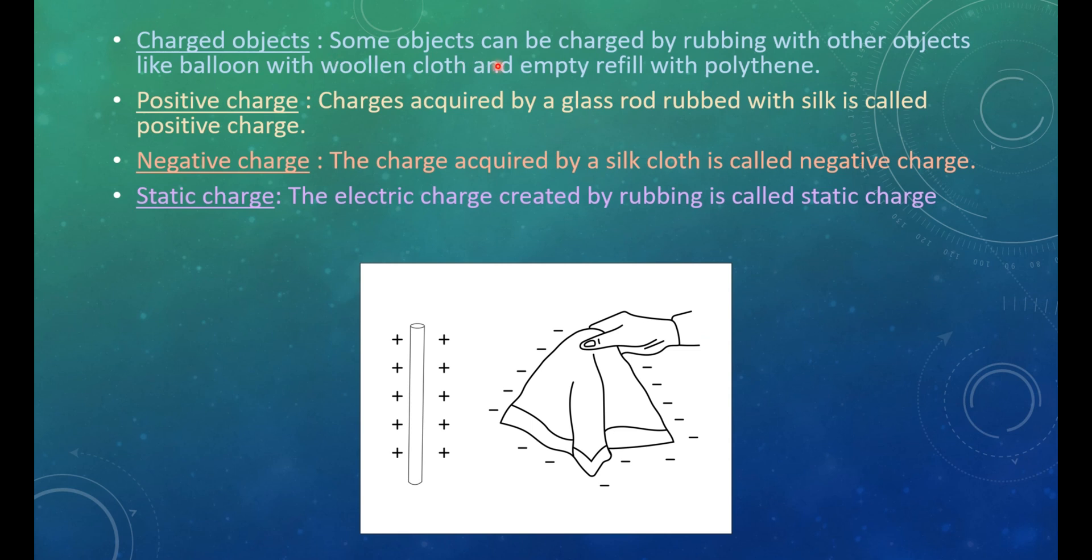Charged objects. Some objects can be charged by rubbing with other objects like balloon with woolen cloth and empty refill with polythene. Positive charge: charges acquired by a glass rod rubbed with silk is called the positive charge. Negative charge: the charge acquired by a silk cloth is called negative charge. Static charge: the electric charge created by rubbing is called static charge.